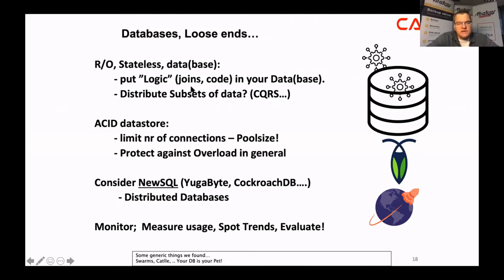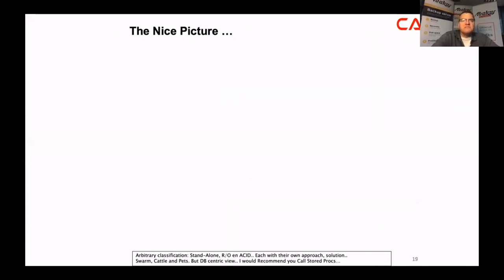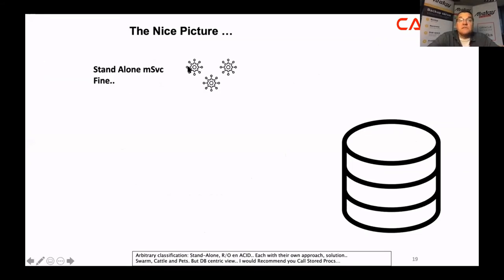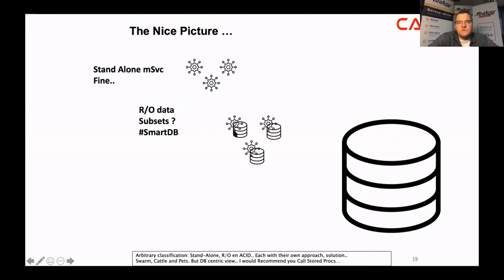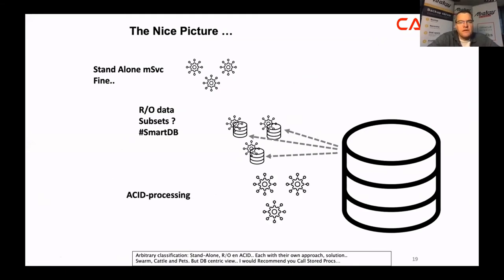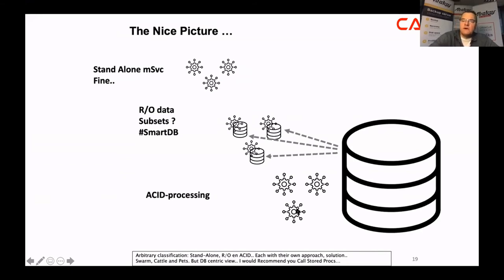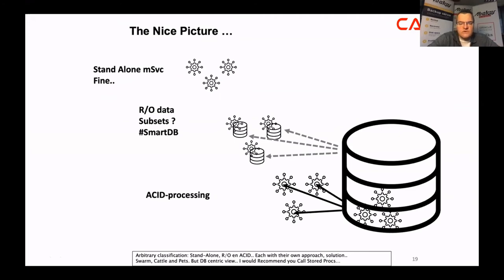Whatever you do with microservices and databases, never forget to have a thermometer — you need to be able to monitor, measure users, and spot trends. Did you really have a thousand users, or was it just your Java creating a thousand connections? A standalone microservice is easy — it can scale forever. Read-only data: choose whether to include it or loosely couple to a database. ACID data: you are hard-connected to your database, or you move the microservice inside the database and call it via REST.